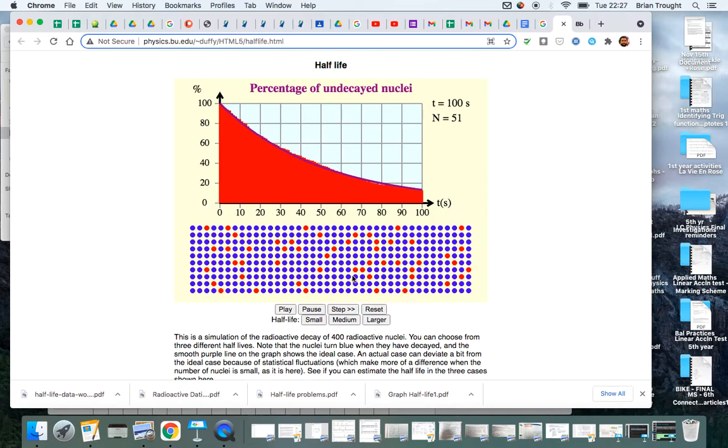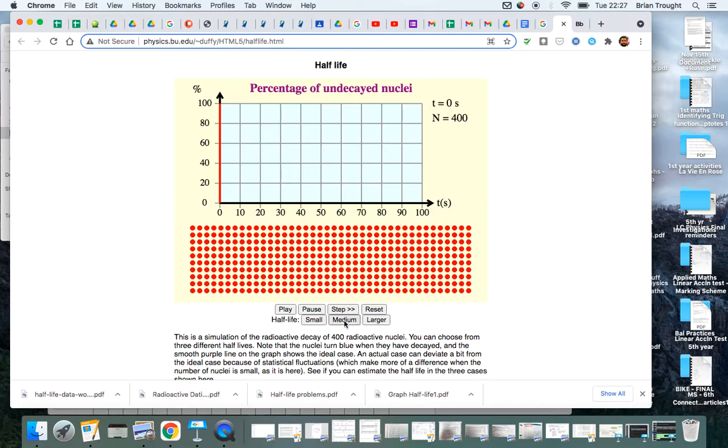Now that's one radioactive isotope. A different radioactive isotope would have a different half-life, so this one has a much shorter half-life. So to get here it was about 18 seconds, another 18 seconds, another 18 seconds, and so on and so forth.